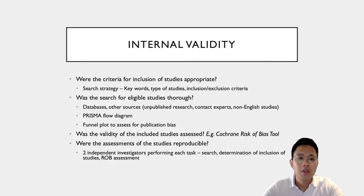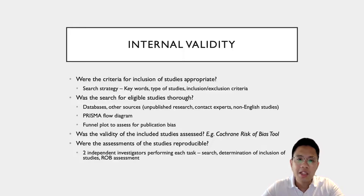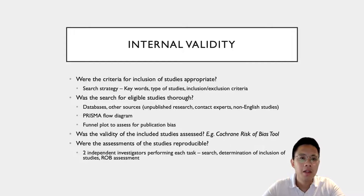Next, we look at whether the search for eligible studies was adequately thorough. This would usually involve looking at what databases were included, whether there were other sources such as unpublished research, whether experts were contacted, whether conferences were looked at, and whether non-English studies were included as well. Typically, a PRISMA flow diagram would include all the potential studies and show how inappropriate studies were weeded out, resulting in the set of studies ultimately included in the systematic review and meta-analysis.